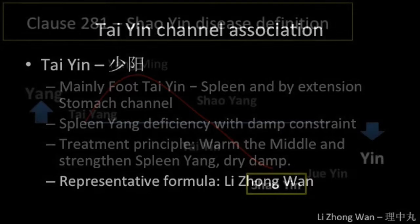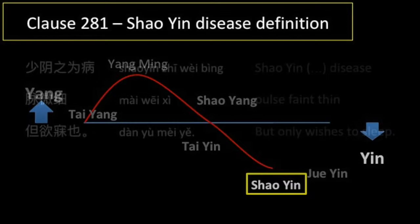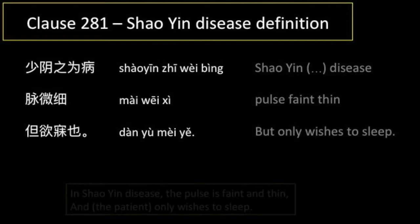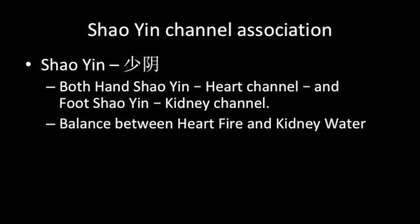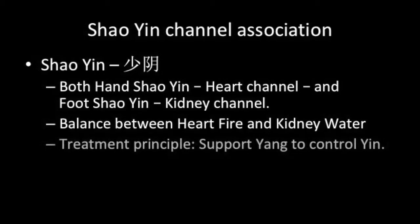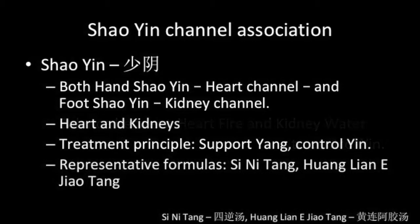Clause 281, Shaoyin channel disease definition: Shaoyin zhi wei bing, mai wei xi, dan yu mei ye. In Shaoyin disease, the pulse is faint and thin, and the patient just wants to sleep. This stage includes both the hand Shaoyin or heart channel and the foot Shaoyin or kidney channel. In TCM, healthy interaction between the heart fire and kidney water is the basis for the normal functionality of our bodies at the most fundamental level. The treatment principle is to support yang and to control yin. The representative formulas are Si Ni Tang and Huang Lian E Jiao Tang.